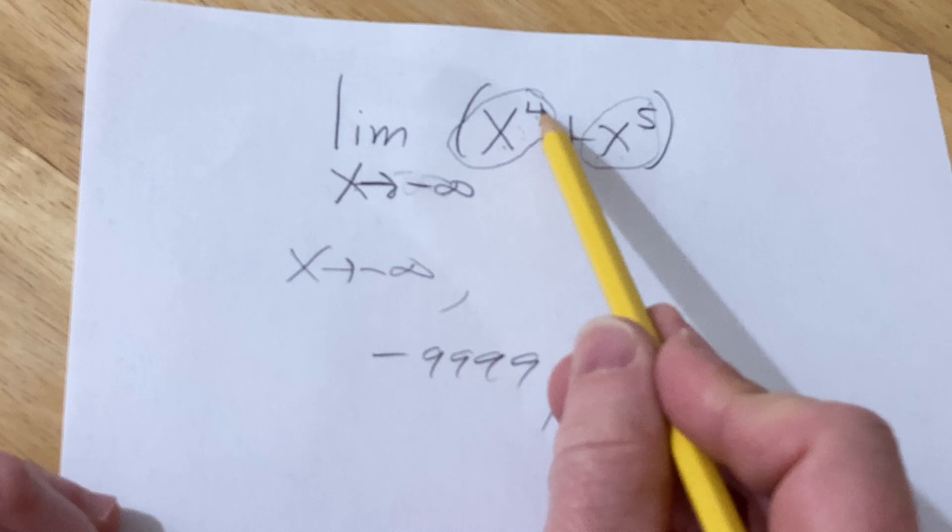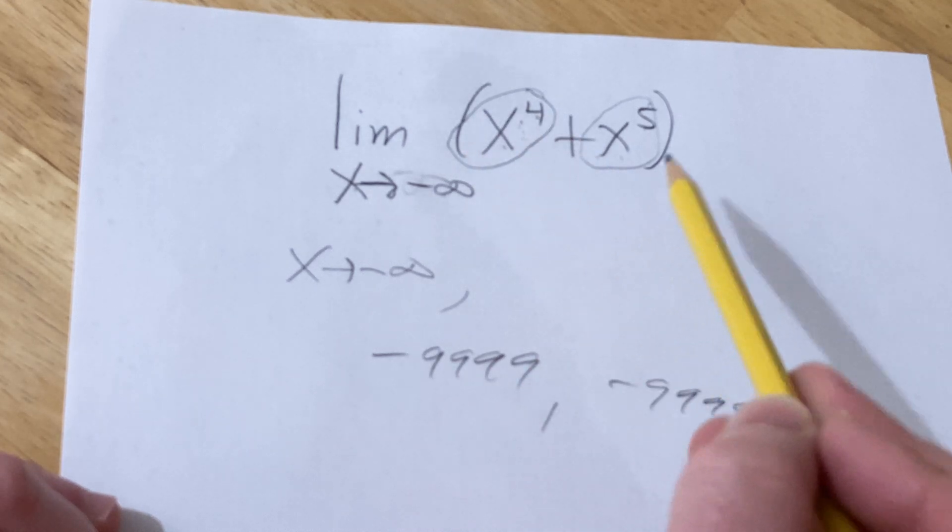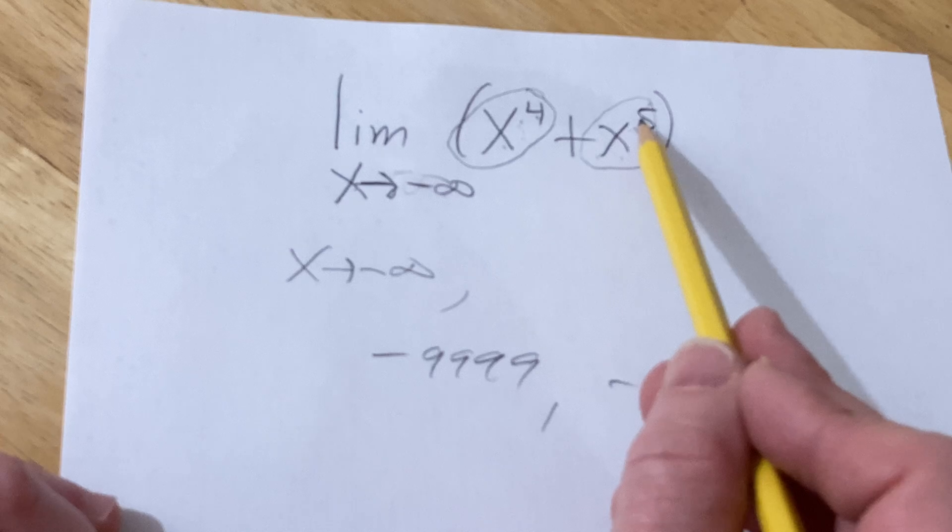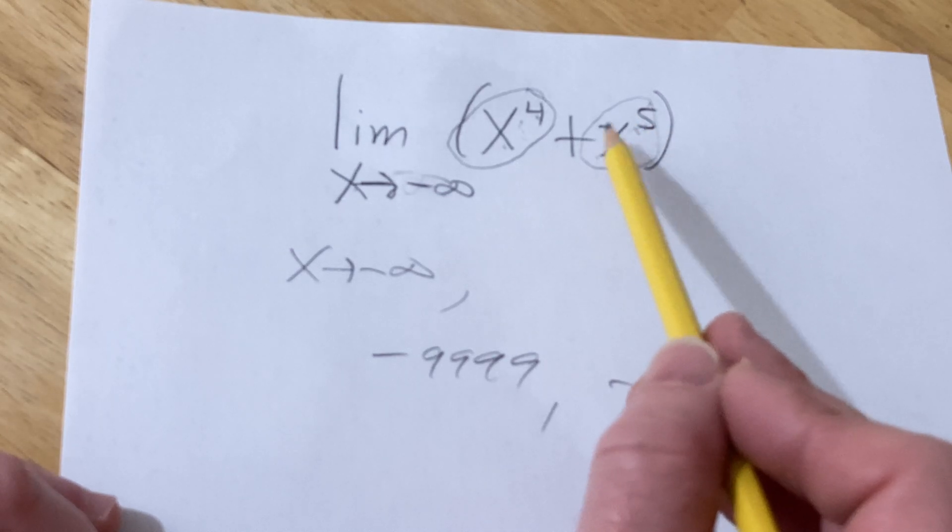So when you raise it to the fourth power, it's going to be huge. Raising it to the fifth power, it's going to be even bigger, except because it's odd, it's actually going to be negative.